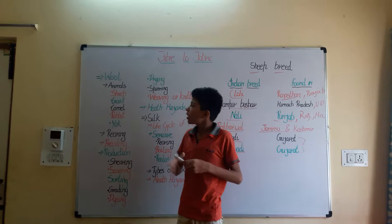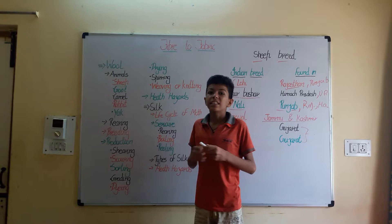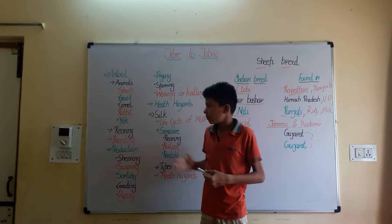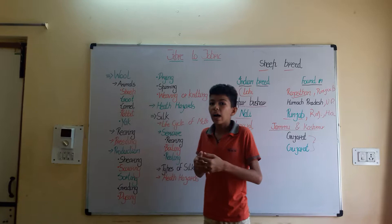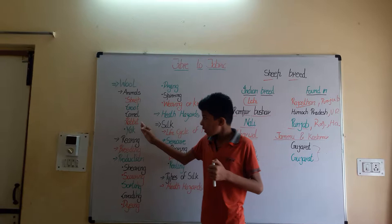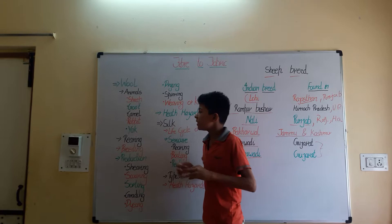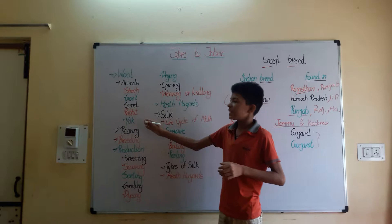Goats also give us wool — for example, Kashmir goats produce the best quality wool. The Bactrian camel and alpaca are good examples of wool-producing camels. Angora rabbits, found in Angora, Spain, also produce the finest quality wool. Yak is another wool-producing animal found in snowy areas; it is a species of the cow family, and its wool is also very good.